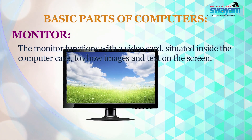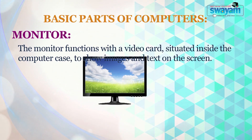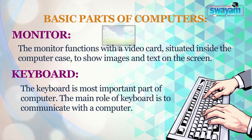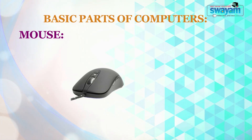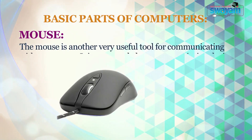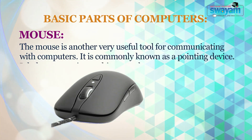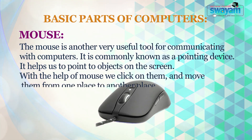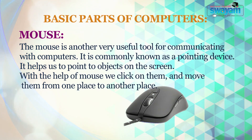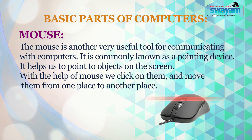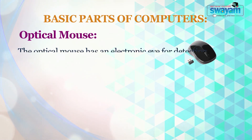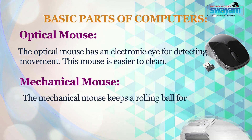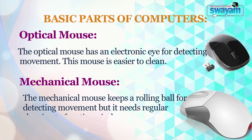The monitor functions with a video card situated inside the computer case to show images and text on the screen. The keyboard is the most important part of the computer; its main role is to communicate with the computer. The mouse is another very useful tool for communicating with the computer, commonly known as a pointing device. It helps us to point to objects on the screen, click on them and move them from one place to another. A mouse has two types: optical mouse and mechanical mouse. The optical mouse has an electronic eye for detecting movement and is easier to clean. The mechanical mouse uses a rolling ball for detecting movement but needs regular cleaning.